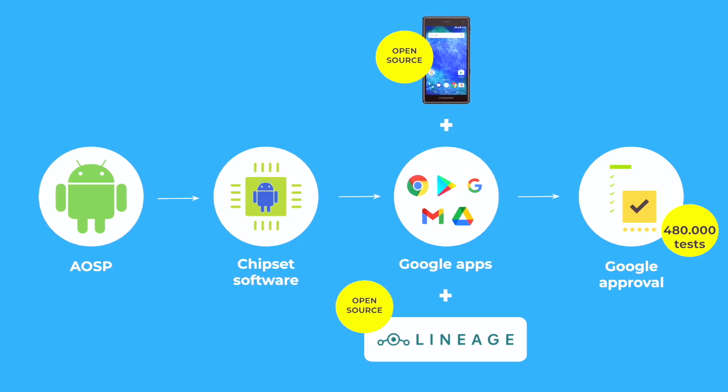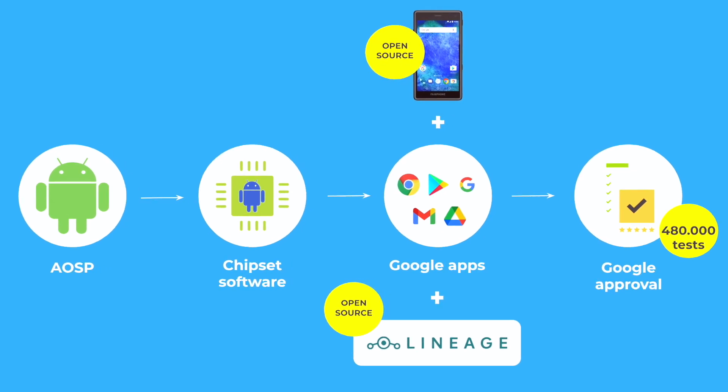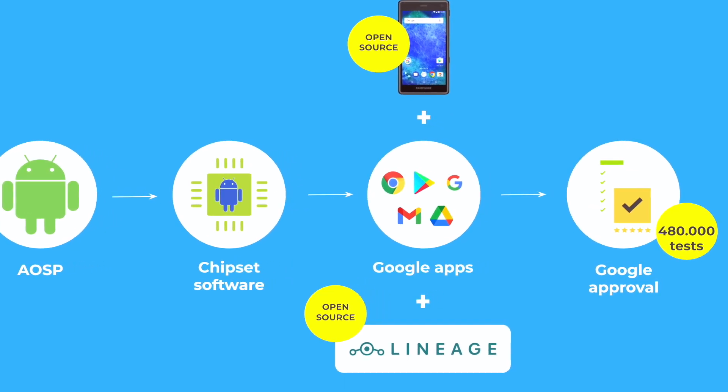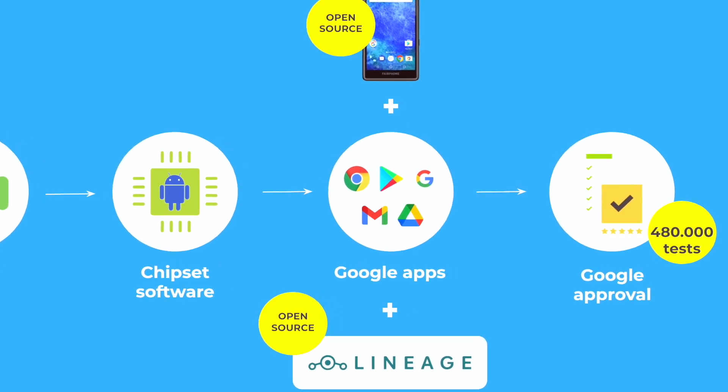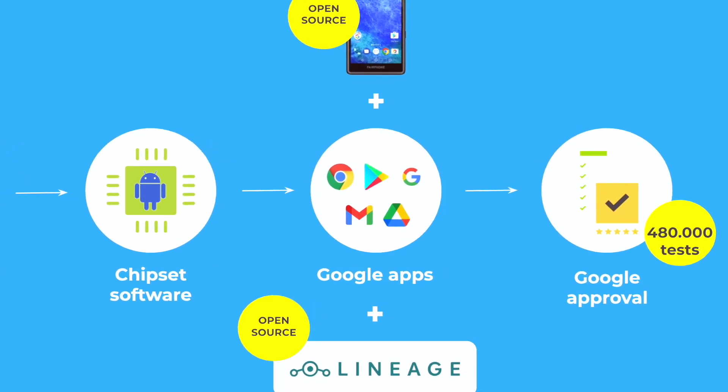For Android 9, once again, we worked together with Lineage and without Qualcomm support, because Android 6 was the last Qualcomm-supported Android version. The jump to Android 9 is way bigger though than compared to Android 7. At the same time, the Google approval process is getting more and more complex. For Android 9 on Fairphone 2, we had to run 480,000 tests to get the approval and pass all of them.